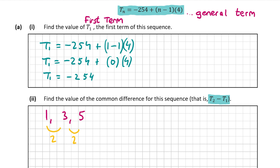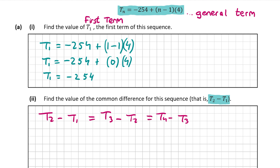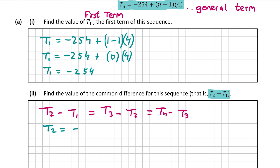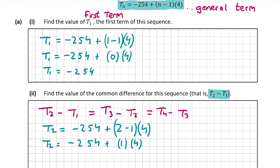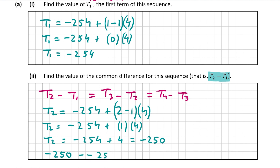So to work out the common difference, you just subtract each term from the term before it, so it's t2 minus t1. But you could also do t4 minus t3 or t3 minus t2 — you should get the same answer every time if it's an arithmetic sequence, which we're told this one is. We've already worked out t1 in part 1 and that was minus 254. Now let's work out t2 and take away t1 from t2. That gives us minus 254 plus 2 minus 1 by 4, which gives us minus 254 plus 1 by 4, so minus 254 plus 4, which is equal to minus 250.